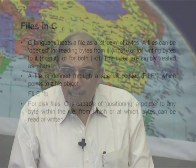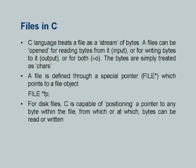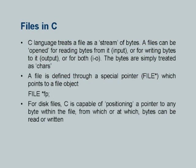C programming language has no direct constructs for input and output — I/O is implemented through a set of library functions. The keyword FILE and all functions dealing with file I/O are part of the standard C library. When you write '#include <stdio.h>' you are including all of these. C is capable of positioning a pointer to any byte within the file from which bytes can be read or written.